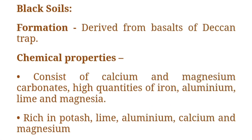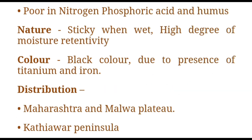Second: Black soil. Formation: derived from basalts of the Deccan trap. Chemical properties: consists of calcium and magnesium carbonates, high quantities of iron, aluminium, lime and magnesium. Rich in potassium, lime, calcium and magnesium. Poor in nitrogen, phosphoric acid and humus. Nature: sticky when wet, high degree of moisture retention. Color: black, due to presence of titanium and iron.